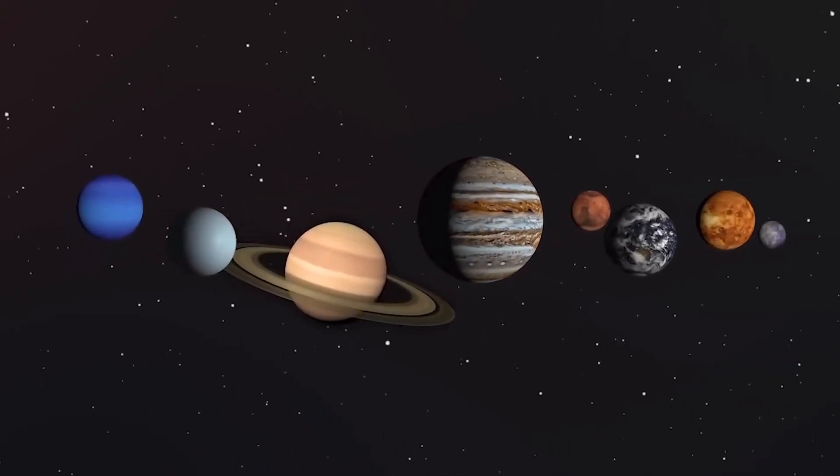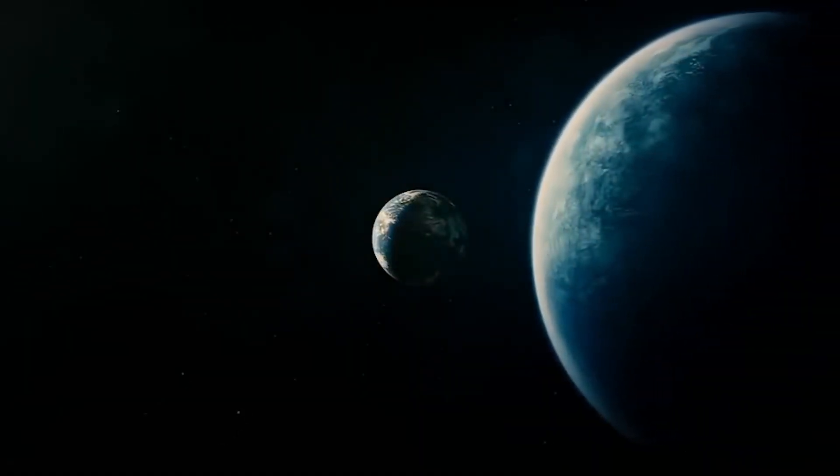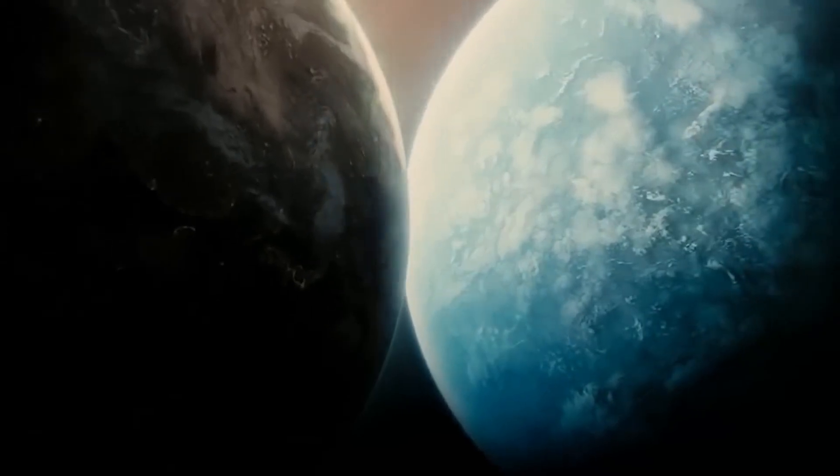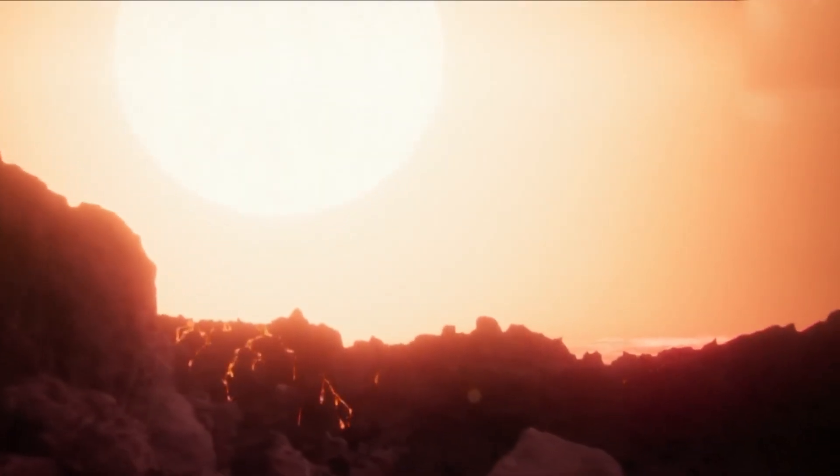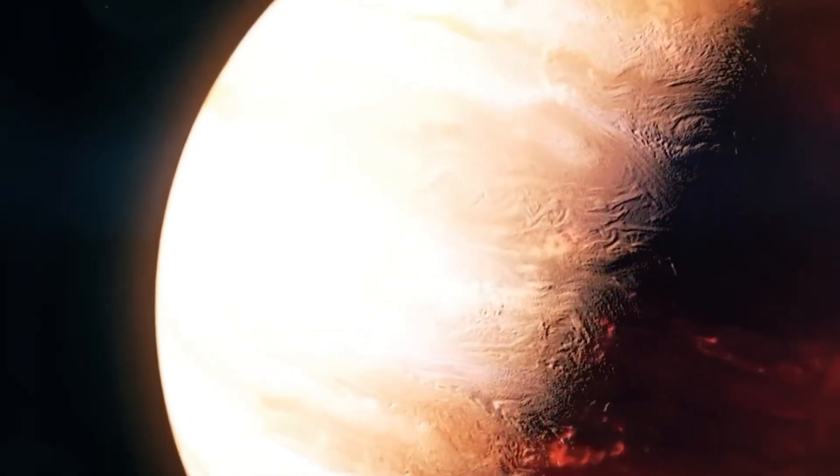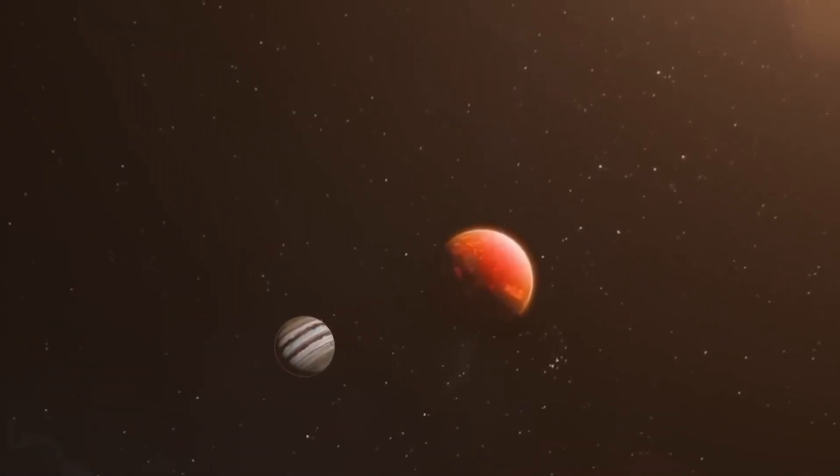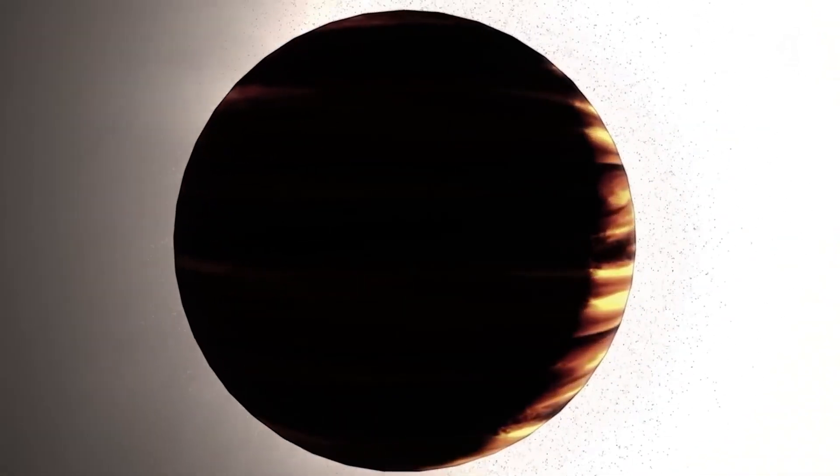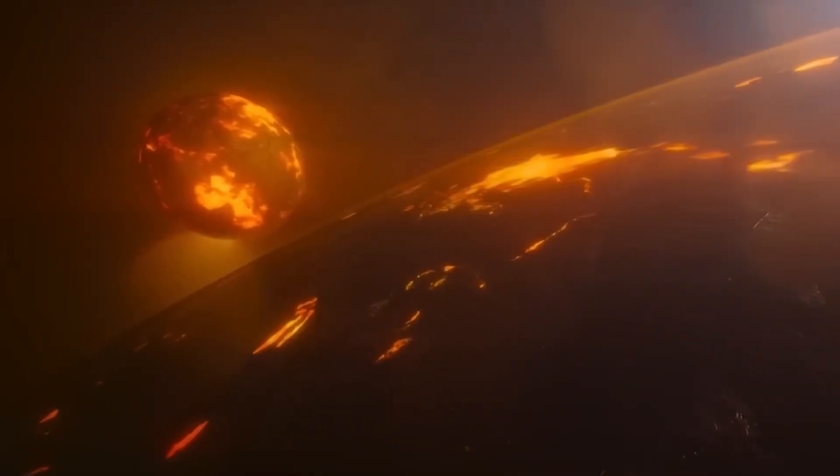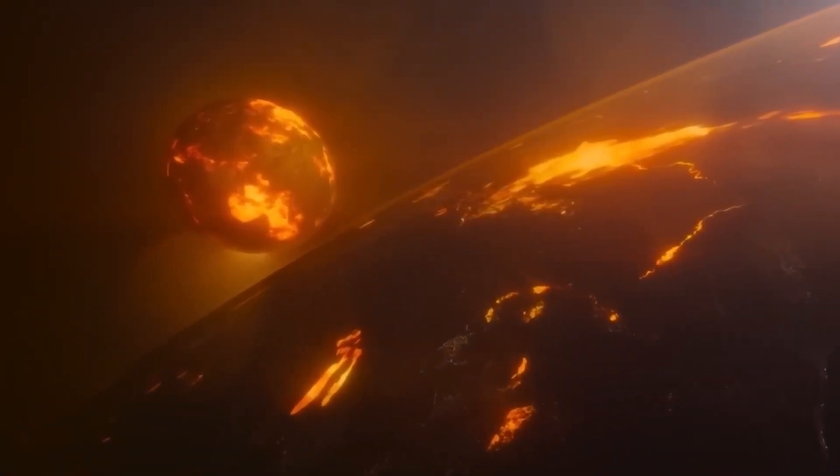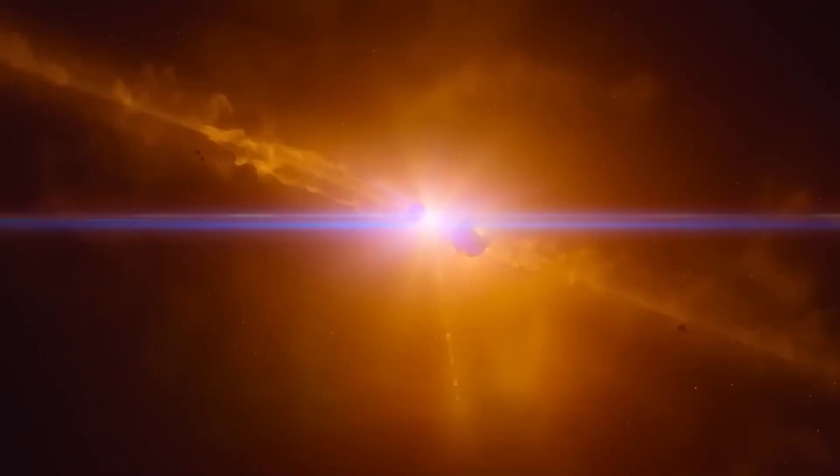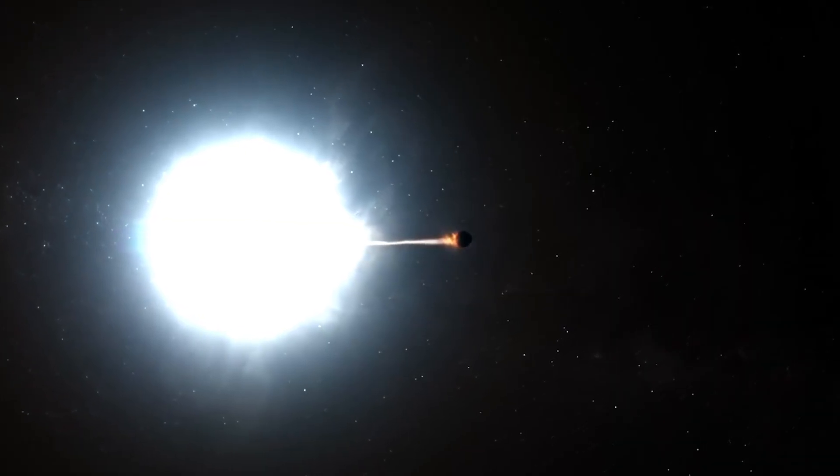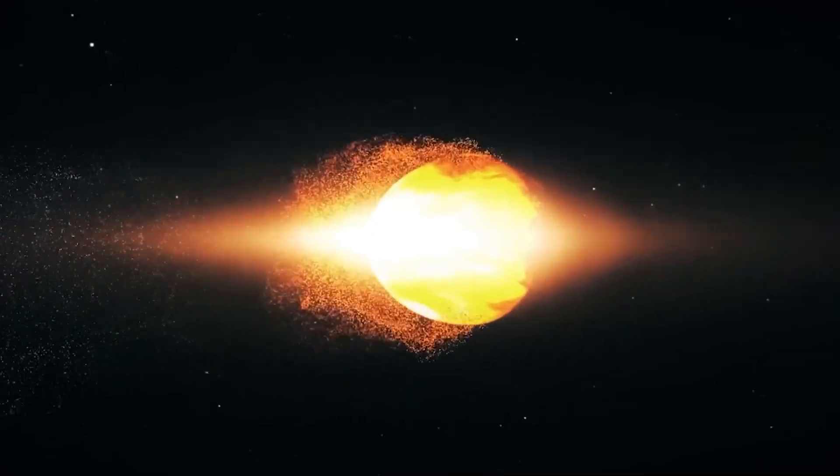Even more staggering is Stevenson 2-18, the largest known red supergiant star. This behemoth is estimated to be 2,150 times the size of our sun and emits 440,000 times more light. If Stevenson 2-18 were to replace our sun, the oceans on Earth would evaporate almost instantly, and all life would vanish within seconds due to its intense heat and radiation.